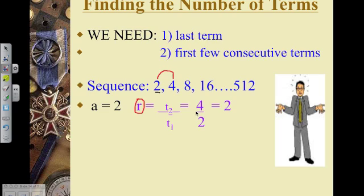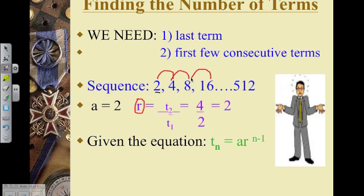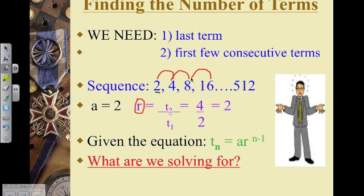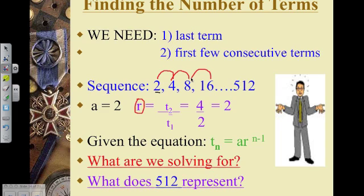But don't just stop at that. Also look at the third term and divide that by the second term. 8 divided by 4 is also equal to 2. And the fourth term divided by the third term, 16 divided by 8, is also equal to 2.